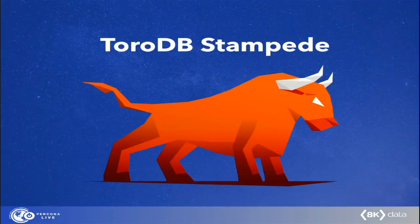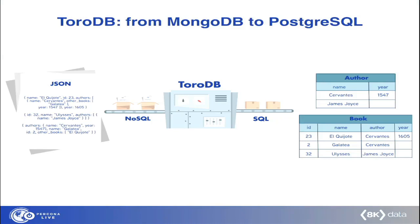TorDB Stampede is the open source solution we're presenting today. How does it work? Basically, it tries to translate data from the unstructured world to a relational schema that resembles what a human — what a DBA — would do to create the structure of tables given the source data. It looks like a factory where JSON documents — strictly speaking, BSON documents — are transformed into a set of tables. What looks like a non-truly organized set of data is transformed into pure relational tables, a schema completely automatically generated.